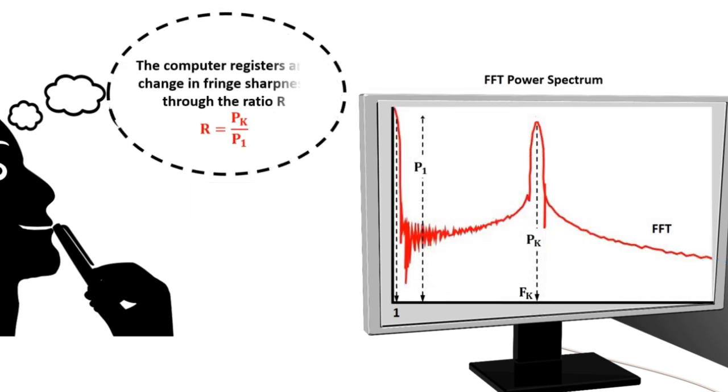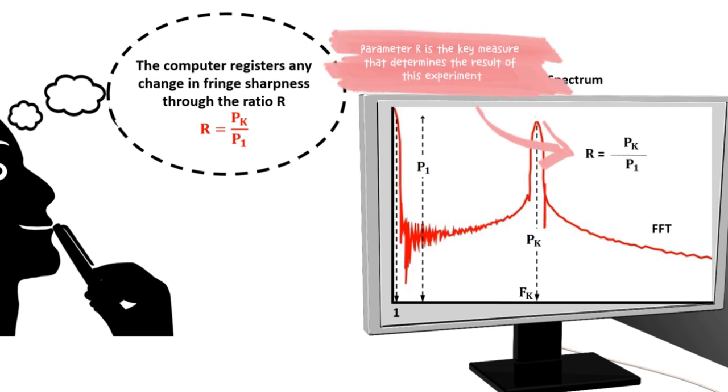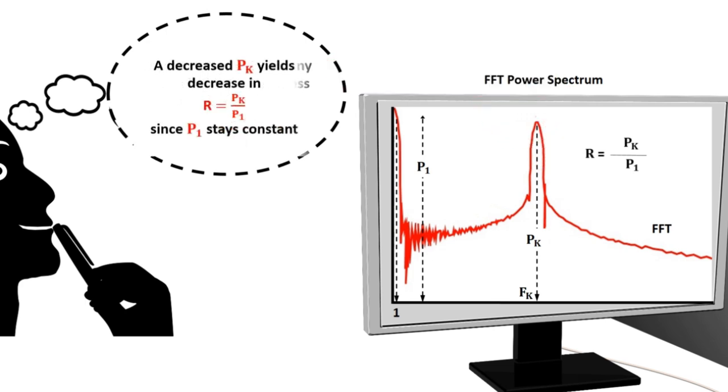The computer registers any change in fringe sharpness through the ratio r, pk by p1. A decreased pk yields decrease in r, since p1 stays constant.